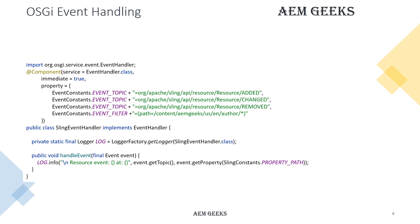Now let's understand the pseudo code. To write the event handler, first you have to implement the EventHandler interface, which comes from the OSGI APIs. As you know, if you are implementing any interface you have to write that in a service. Once you do that, these properties are important — you will be writing them under property: event.topic. You can define in event.topic what kind of events this will be listening to, such as add, change, or remove — these are the standard events.